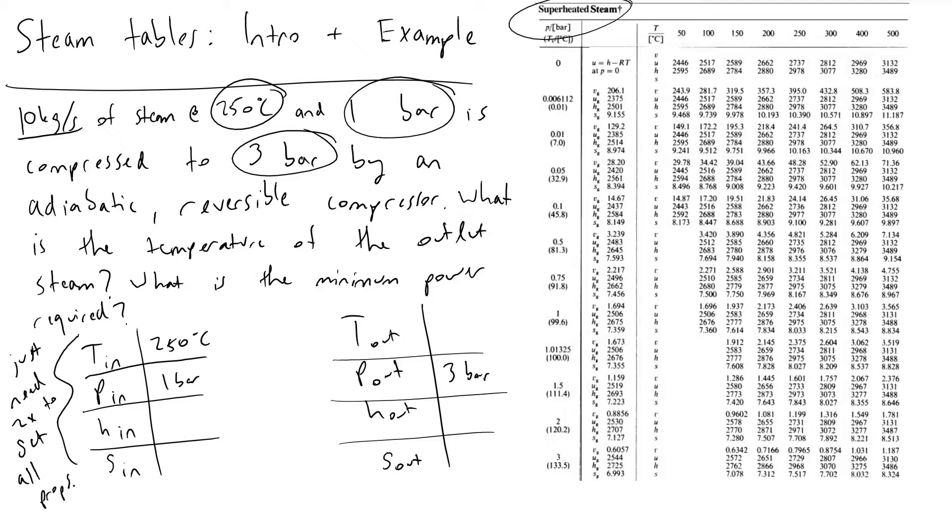If we look at our steam table at 250 degrees C and a pressure of one bar, we arrive at this element here in our steam table, and the last two elements are the ones that we're interested in this case. What it tells us is that our specific enthalpy is 2975 kilojoules per kilogram and the specific entropy of our steam is 8.033 kilojoules per kilogram per kelvin.